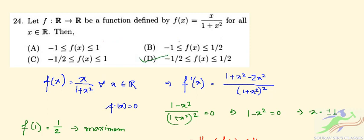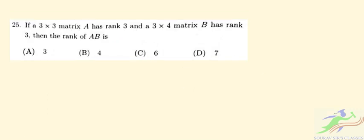Question number 25 is saying that if a 3×3 matrix A has rank 3 and B, a 3×4 matrix has rank 3, then we have to find the rank of AB.